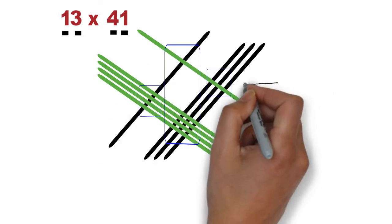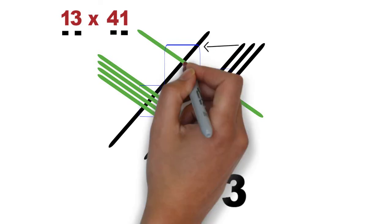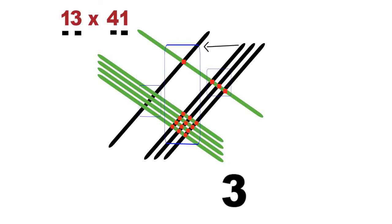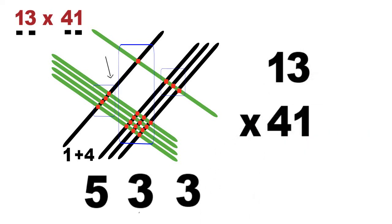We start with the zone at the extreme right. And count the number of intersections. 1, 2, and 3. 3 intersections. Now, for the second zone, from the right, at the top, we can see there is one and at the bottom. There are 12 intersections. So, total, 13 intersections in the second zone. But wait, what do we do when we get 2 digits under a zone? We simply carry the tens digit over to the column on the left. Yes, that's all. We carry the 1 over. And now, if we look at the final zone, there are 4 intersections. We add the 4 to the 1 that was carried over. And that gives us 5. That's the answer. 13 times 41 gives us 533.